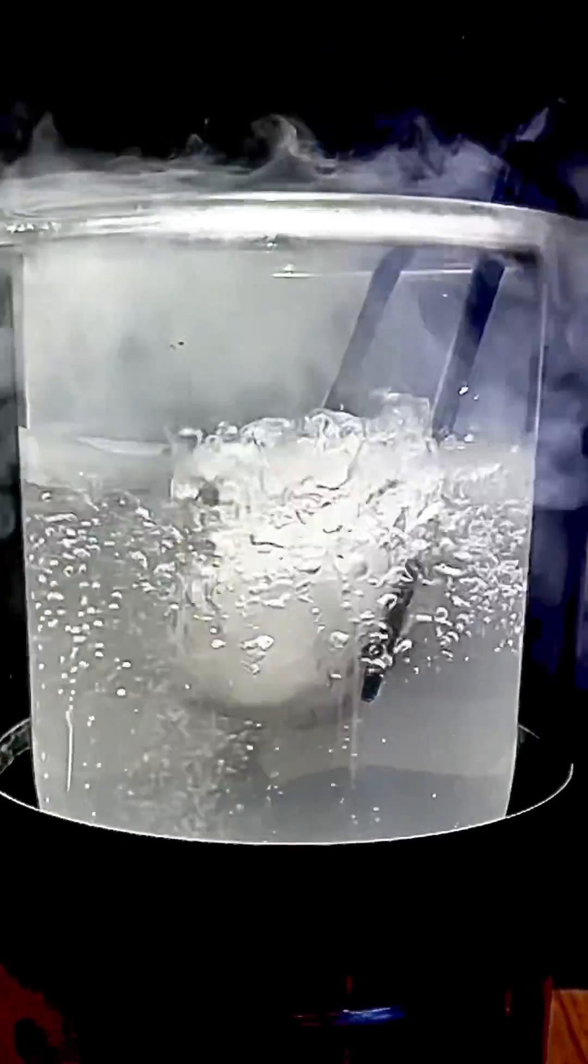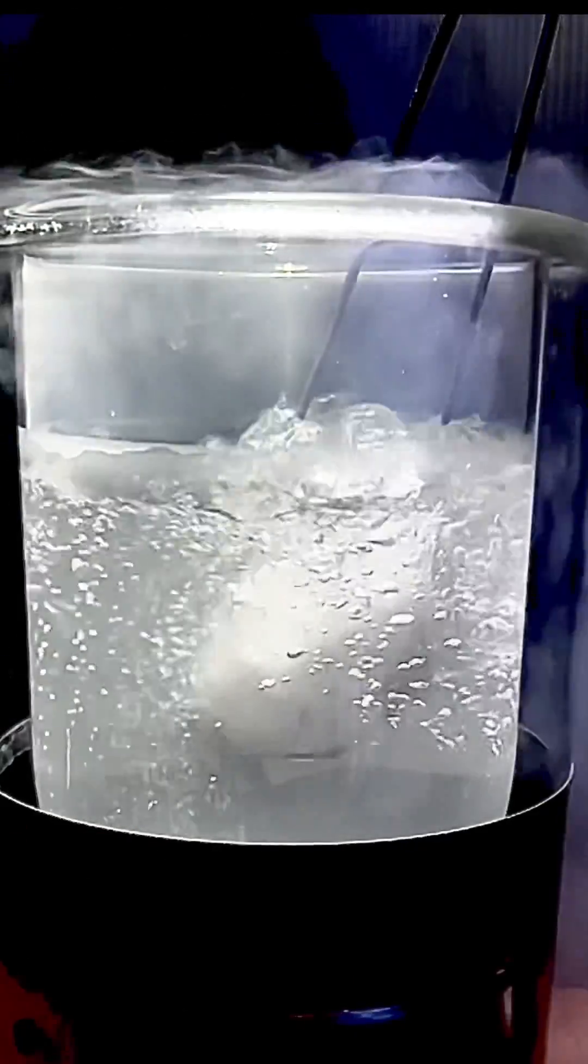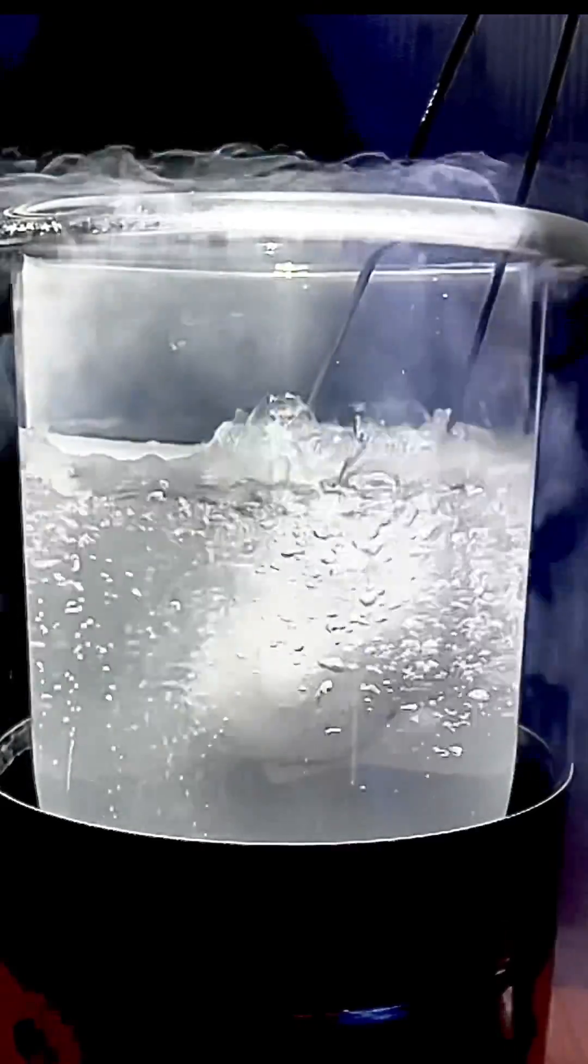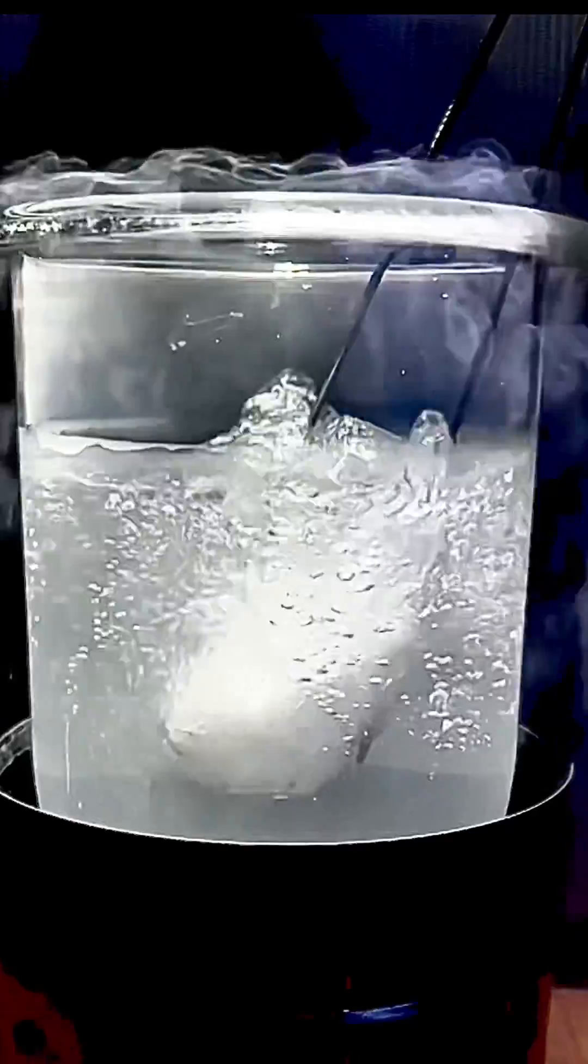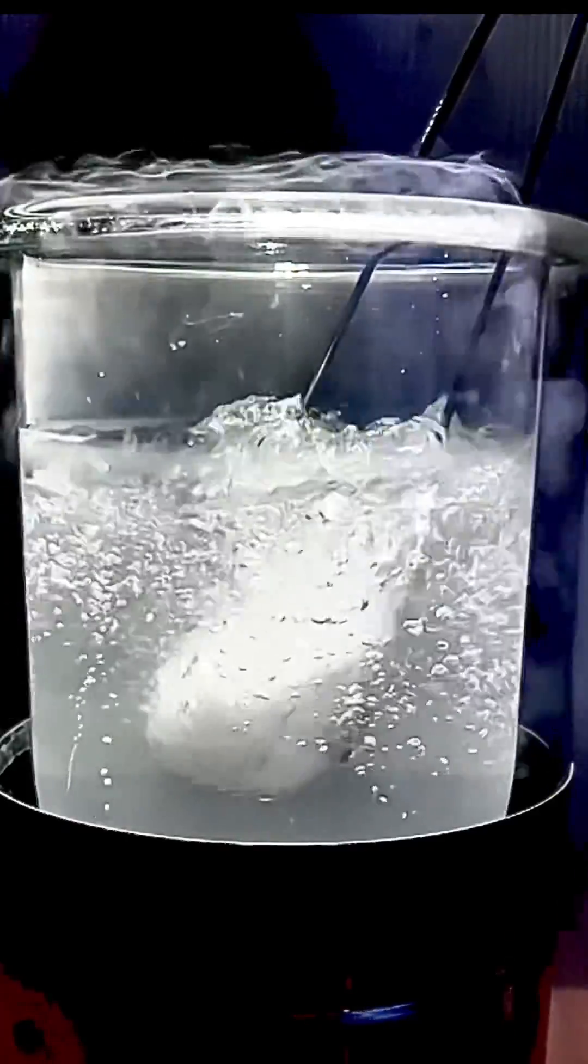But notice over time the cloud begins to dissipate. This is because the chunk of dry ice gets so cold in the liquid nitrogen that it no longer sublimes. And with no carbon dioxide gas being given off, there's nothing that can form the tiny dry ice cloud particles.